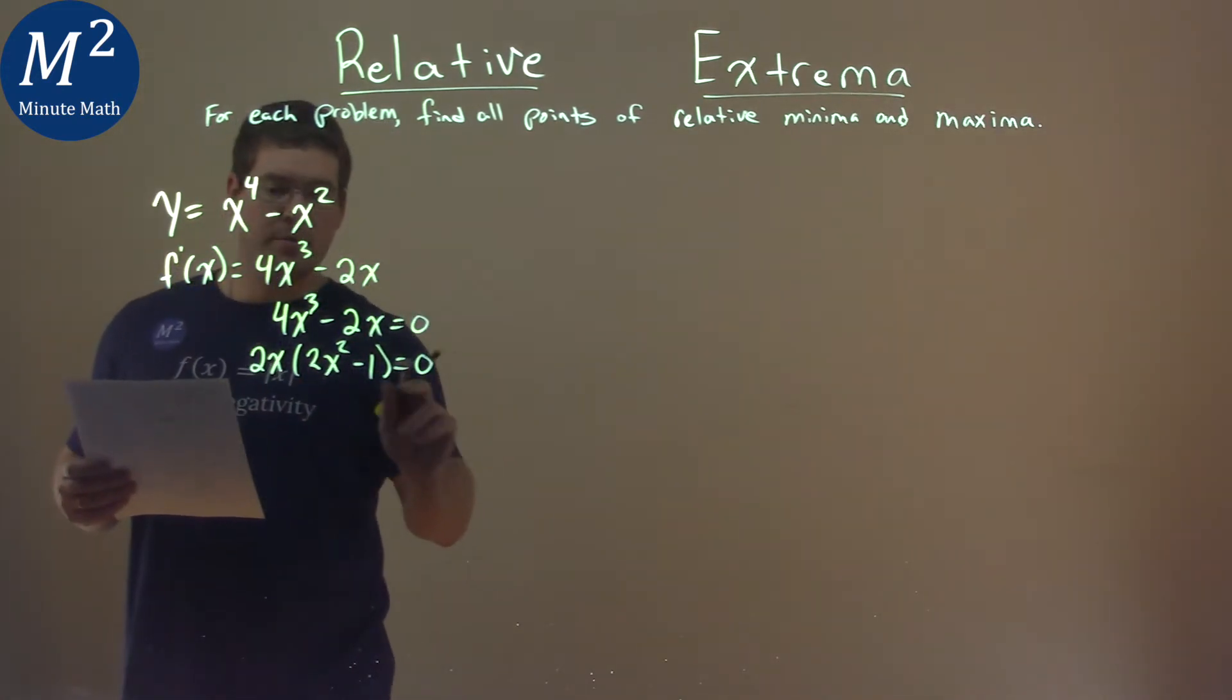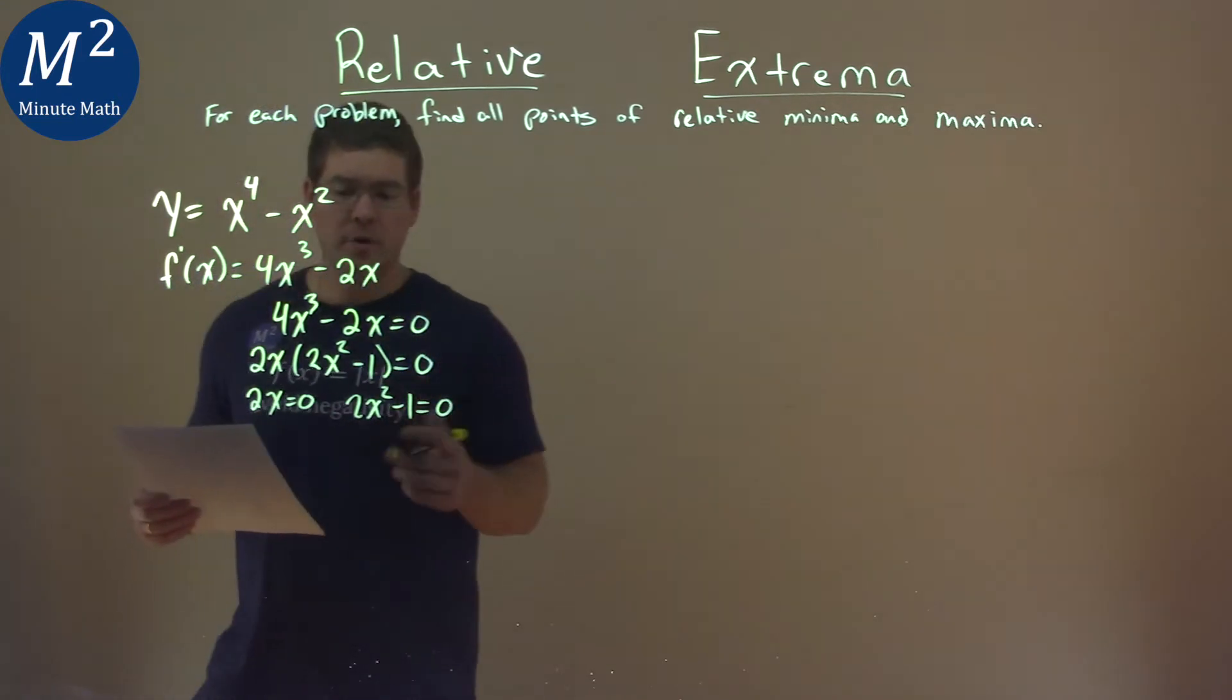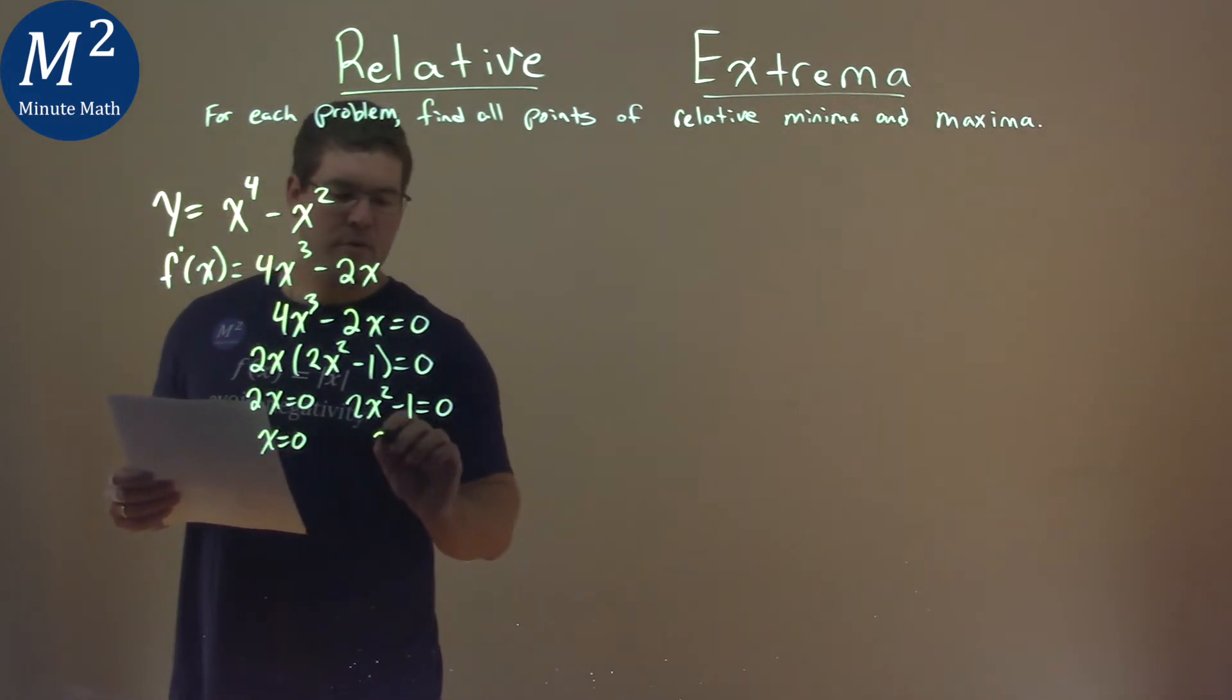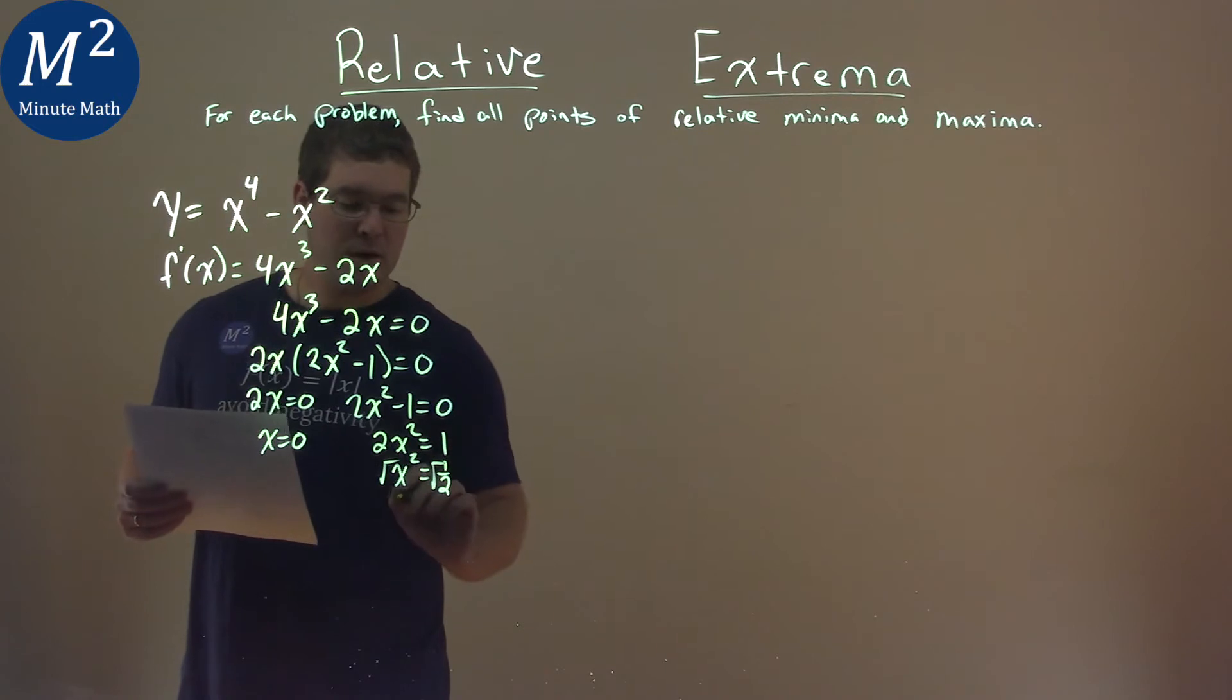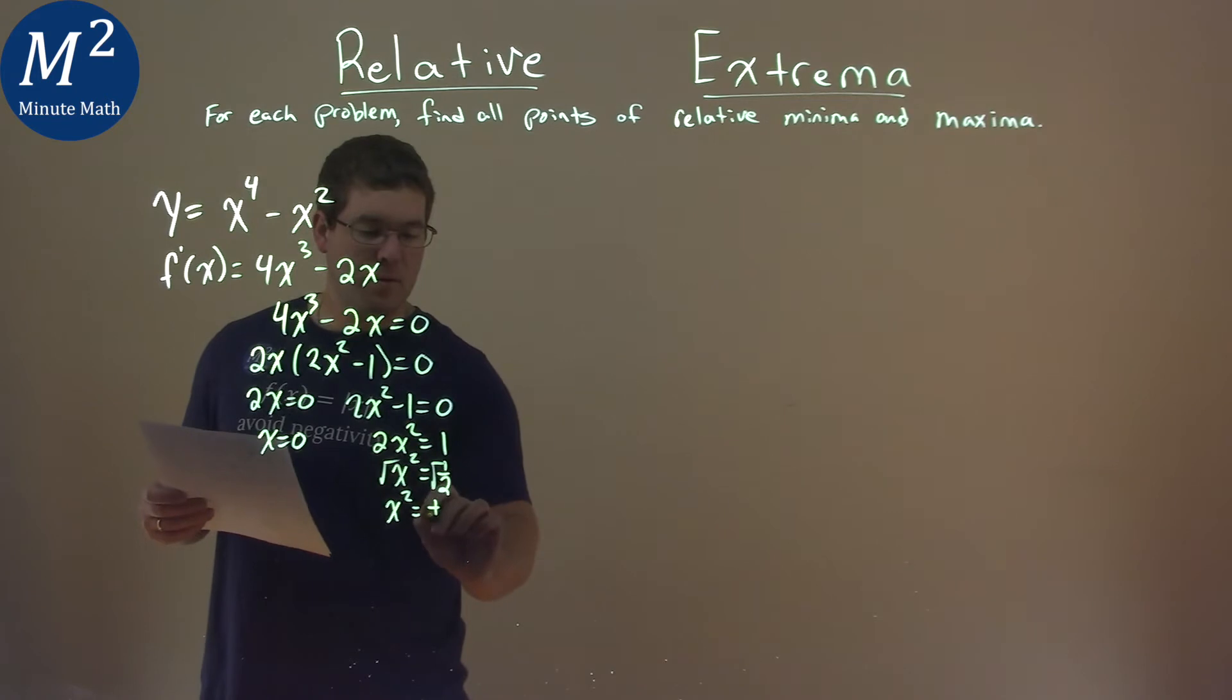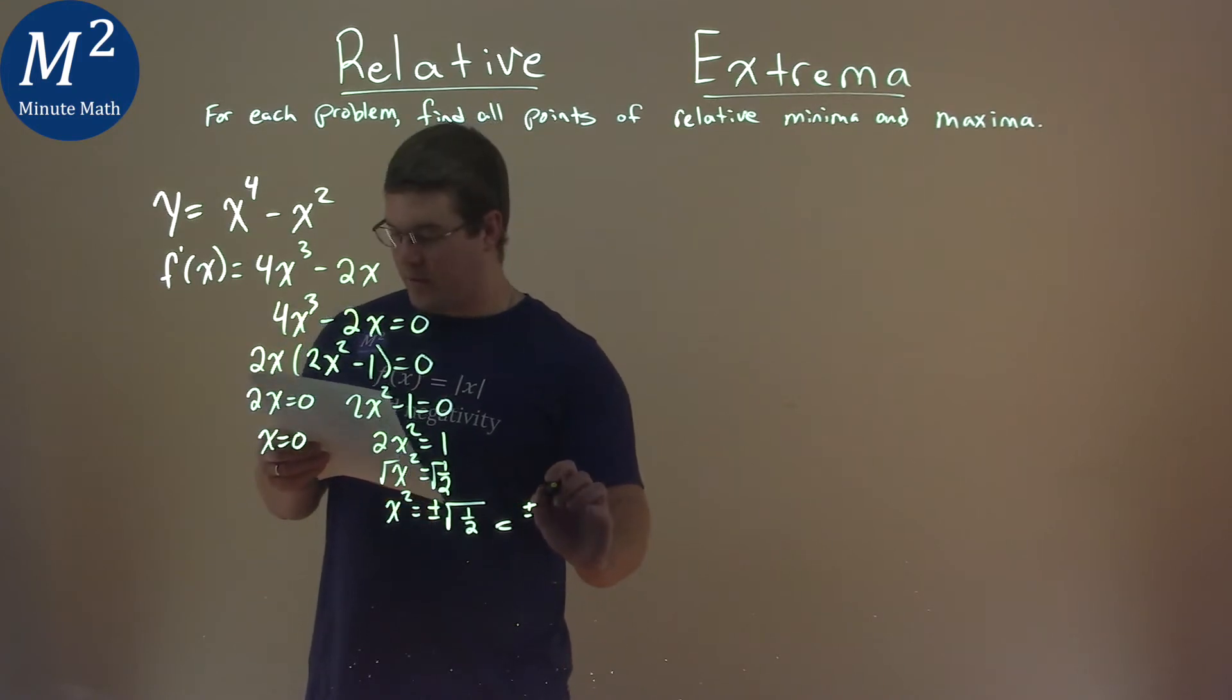From there, I'll set both parts equal to zero: 2x equals zero, and 2x squared minus 1 equals zero. Solving for x, divide both sides by 2, x just equals zero. Add 1 to both sides, 2x squared equals 1, divide both sides by 2, x squared equals 1 half, square root both sides, and we have x equals plus or minus square root of 1 half, which simplifies to be plus or minus the square root of 2 over 2.